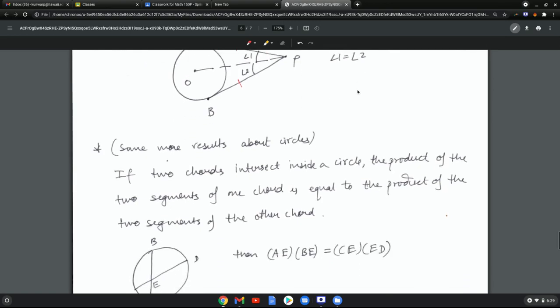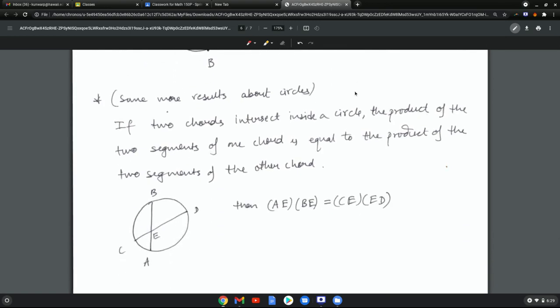There is one more result about circle which comes in handy: just like we had two tangents, if we have two chords and they intersect then the product of the segments correspondingly become equal. So if you take AE multiplied by BE it's going to be the same as CE multiplied by ED.